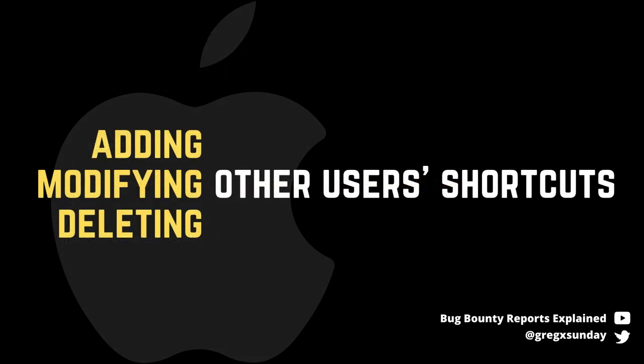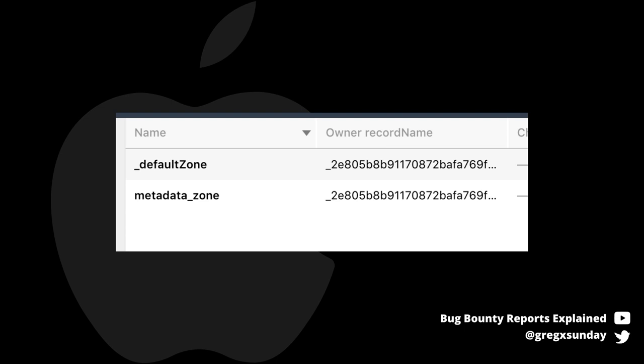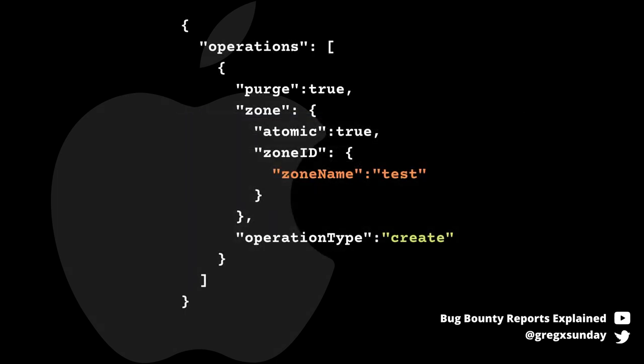The obvious and very impactful attacks that come to mind are adding, modifying, or deleting other users' shortcuts. However, access control was properly enforced on all those scenarios. One more thing you need to know about CloudKit are zones. Public and shared databases can only use the default zone, but in the private one you can create new zones to group related objects together. At least that's what the documentation says. But it turned out that the public database in the shortcuts container did use more than that — it also had a metadata zone. It was even possible to add new zones to the database, but there was no impact to this as your zone wouldn't be used by anyone. You could also delete the zone you created, but only when authenticated as the same user, which hinted that access control was properly enforced on those zones.